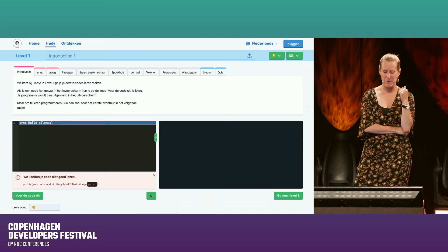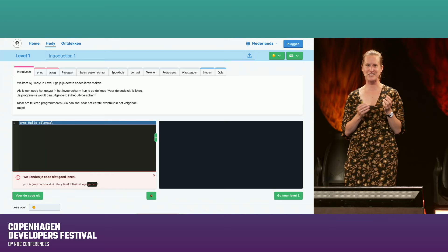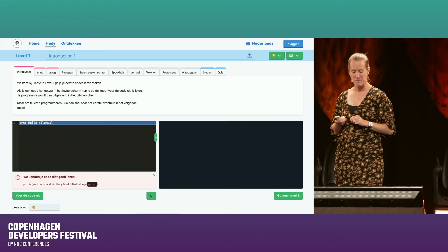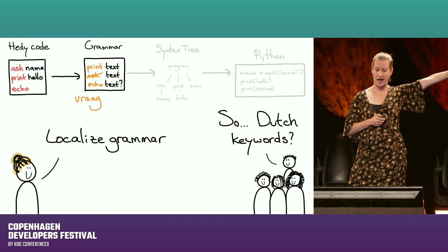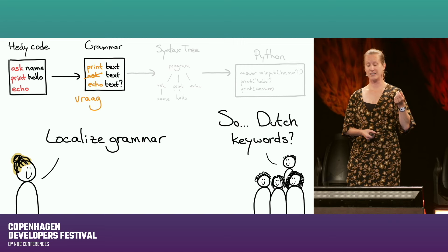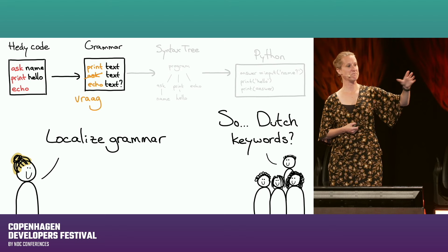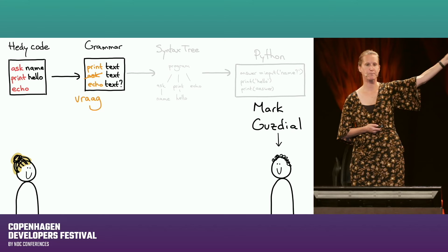Let's talk about how that actually works. In our architecture, it's not so hard to localize a grammar. In Dutch, 'print' is print and 'echo' is echo — you only need to change 'ask' to 'vraag' in the grammar. I put this on the internet as a switchable language. Then Marc Guzdial, a computer science education professor working with Spanish-speaking students in the US, said, 'Hey Feline, do you know bilingual people exist?' — meaning bilingual people want to mix keywords from different languages. Instead of one language in the grammar, just allow either keyword.